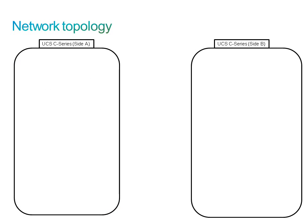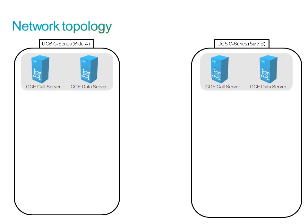The CCE call server functions as the call router and makes all routing decisions on how to route the call or customer contact. This server will also act as the peripheral gateway, which is used to interface with the Communications Manager. It will also function as the CTI object server, which is used to interface to the agent desktops.